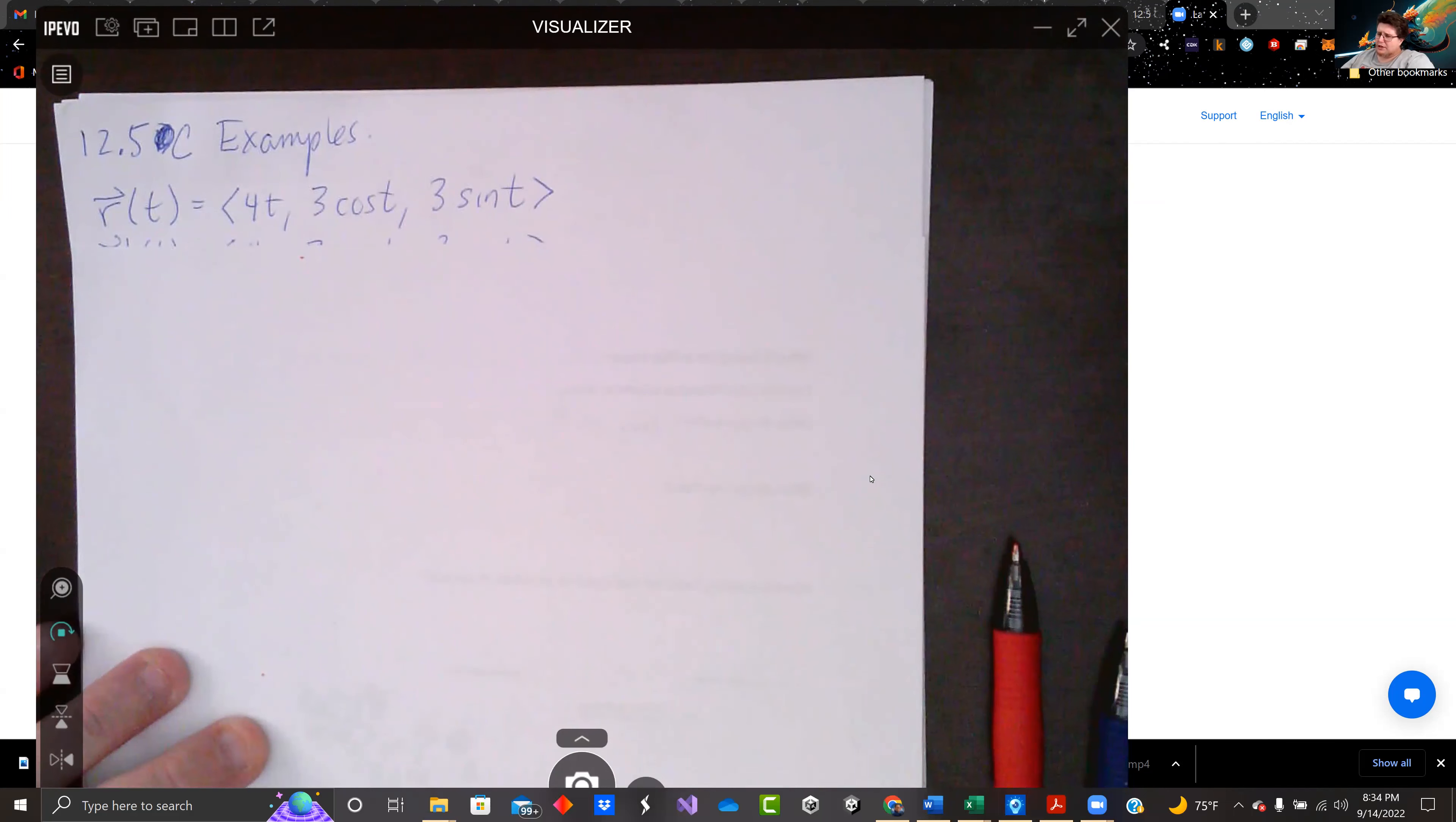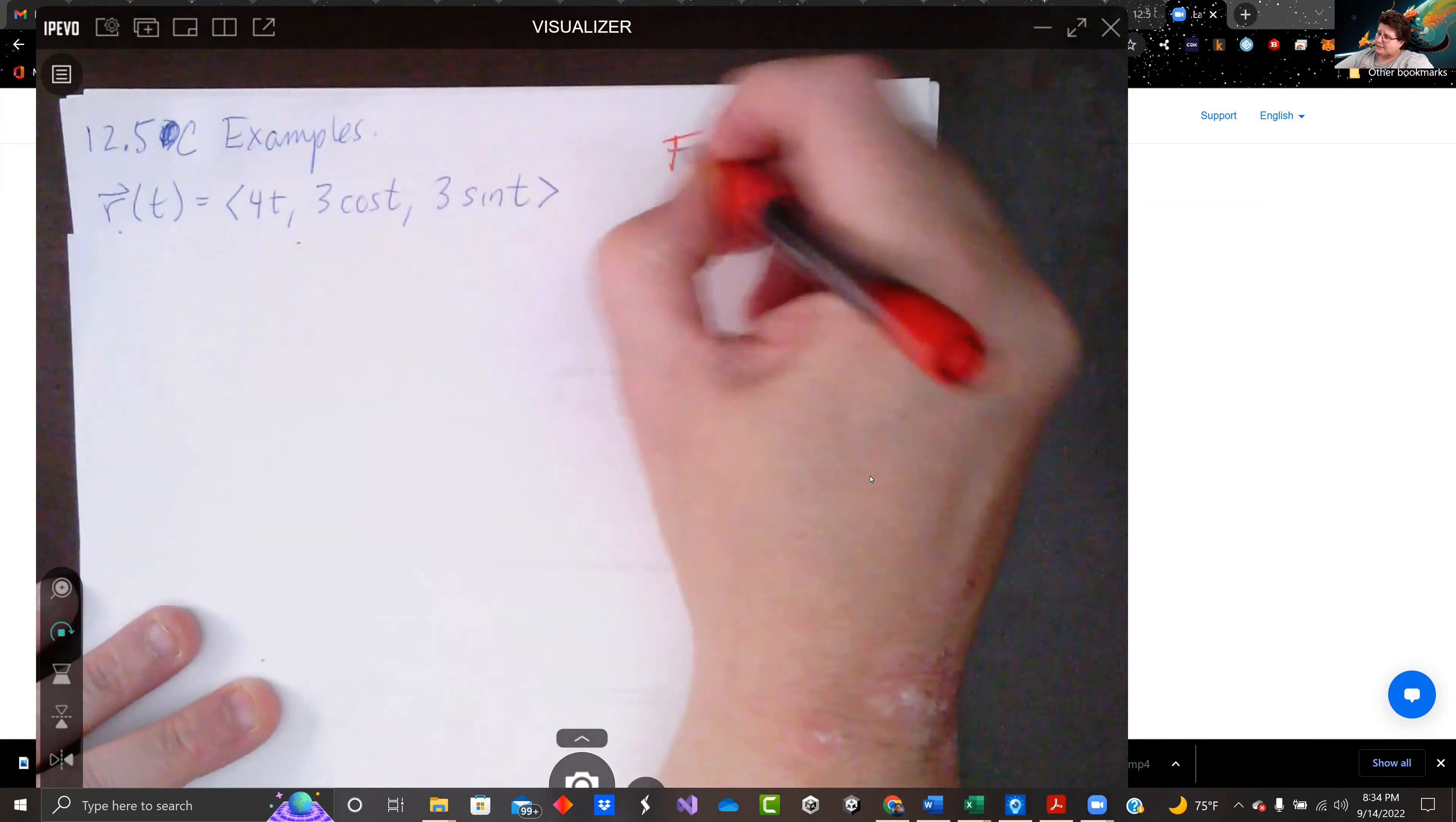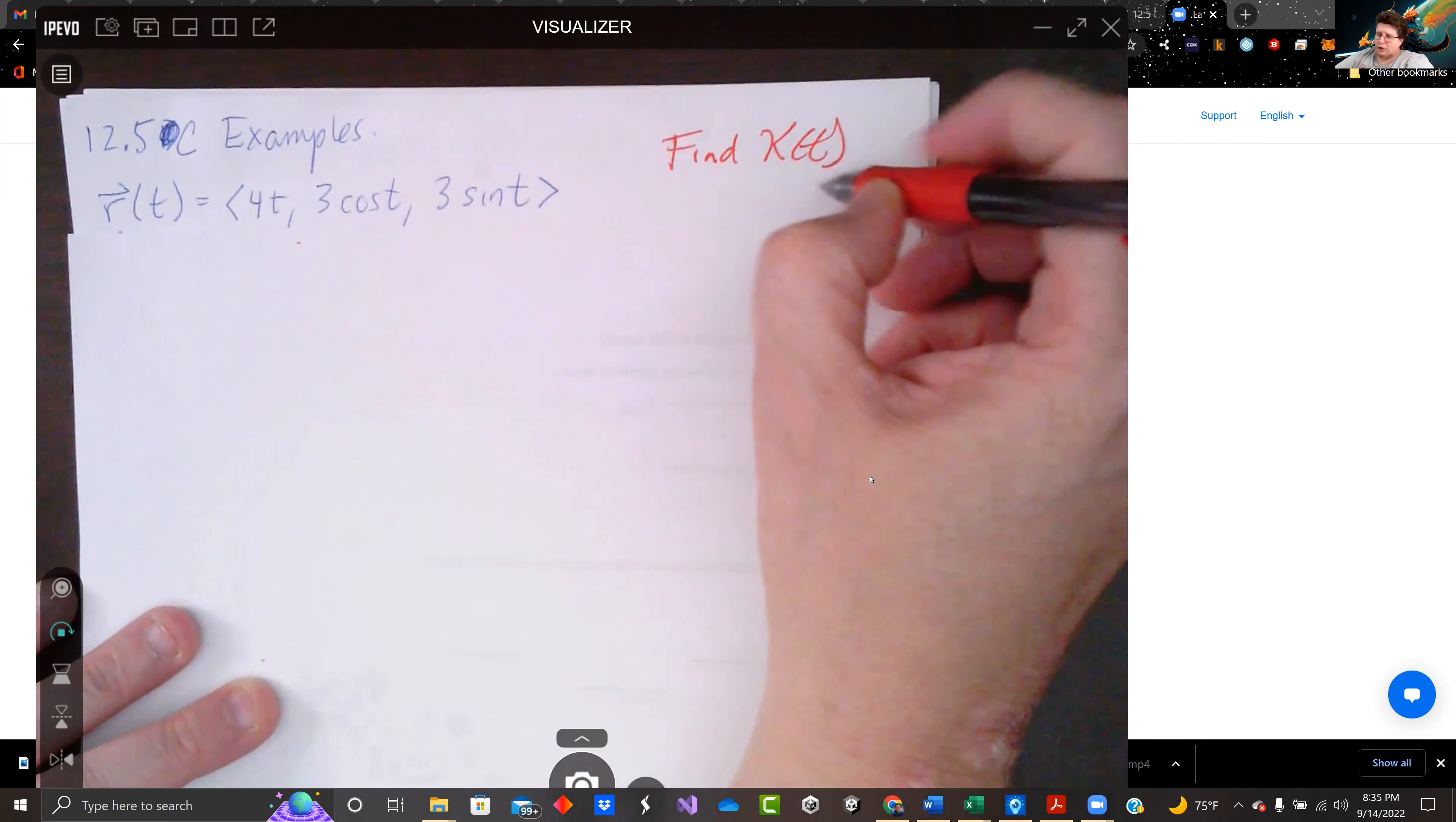We've got some examples for you. We're going to start with the vector in 3 space. R of t equals 4t, 3 cosine t, and 3 sine t. And we're looking for curvature. So find kappa of t. And we've got a couple formats. Recall...